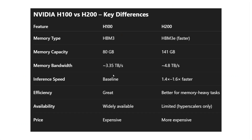Regarding key differences: the memory type differs — the memory used by H200 is faster, and the capacity of one H200 is almost double that of H100. Memory bandwidth is better, inference speed is about 1.4 to 1.6 times faster than H100, and efficiency is greater — better for memory-heavy tasks. H100 is widely available while H200 is rare. In terms of price, H200 is the most expensive GPU, and H100 itself is quite expensive.